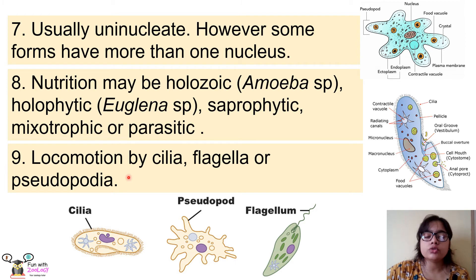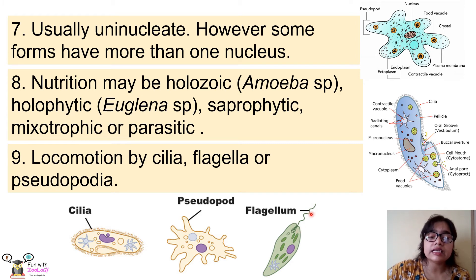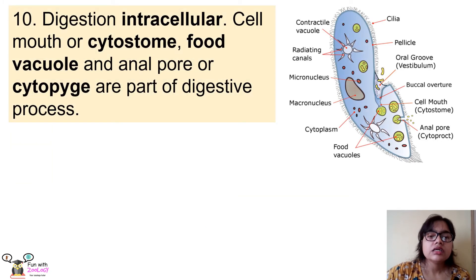The next point is about locomotory organelles. We know protozoans are motile and can move from one place to another. Just as humans have legs to move, protozoans have three types of locomotory organelles: cilia, flagella, and pseudopodia. Cilia are small hair-like structures, many in number, found on the outer body surface — as in Paramecium. Pseudopodia are projections of the cytoplasm found in Amoeba. The flagellum is also a hair-like structure but longer than cilia, found in Euglena.